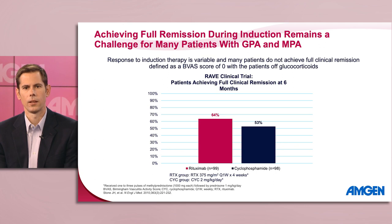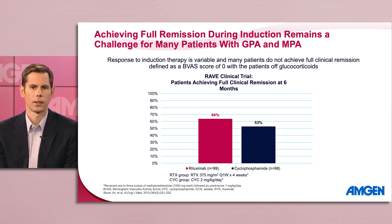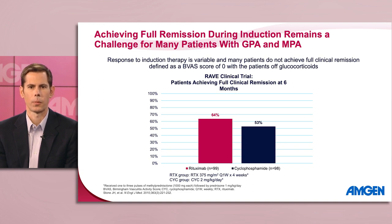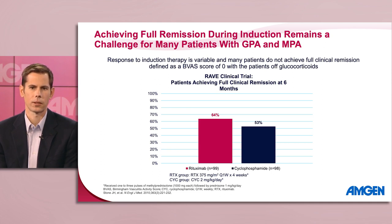In this study, full clinical remission was defined as a BVAS score of zero with the patient off glucocorticoids. The BVAS, or Birmingham Vasculitis Activity Score, is a validated tool for assessment of disease activity in patients with many different forms of vasculitis. It includes scored items grouped into nine organ systems, which capture a broad spectrum of clinical manifestations from vasculitis. Only features attributed to active vasculitis are considered.